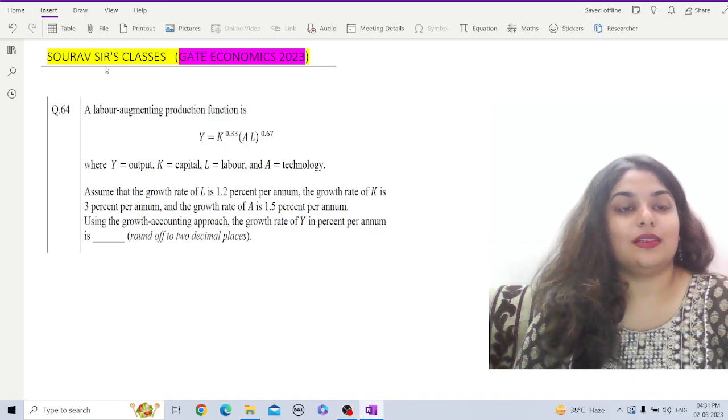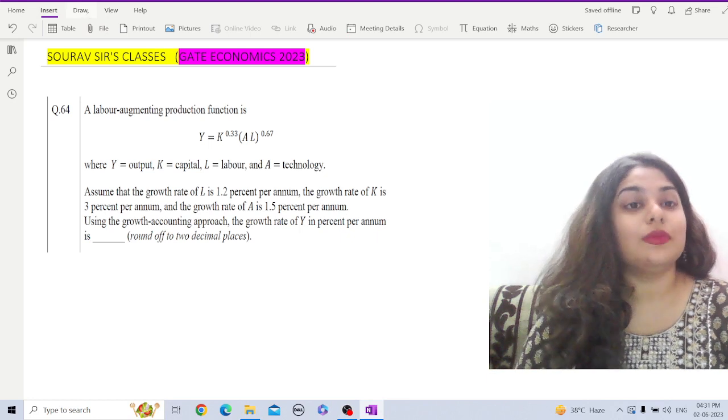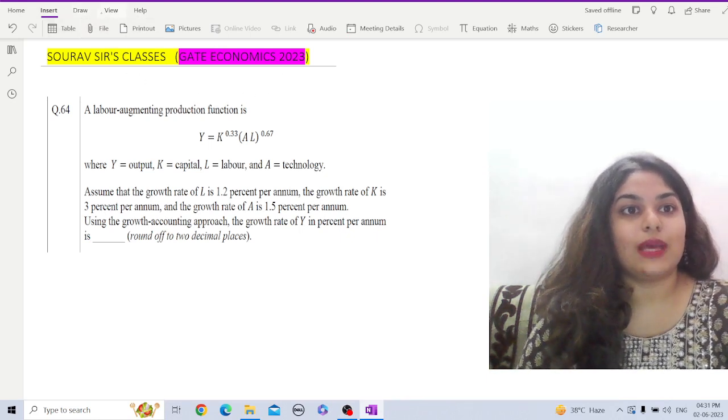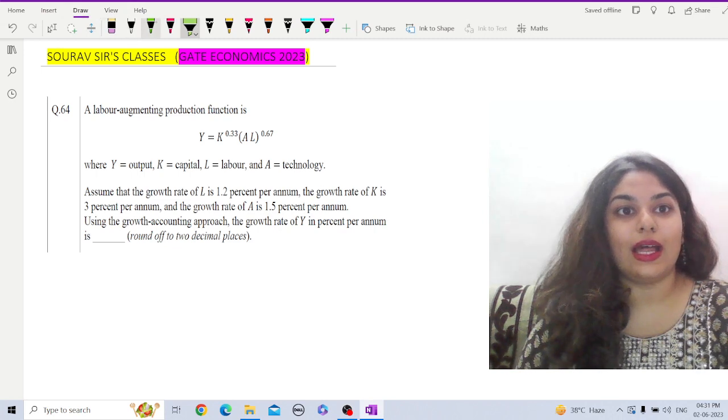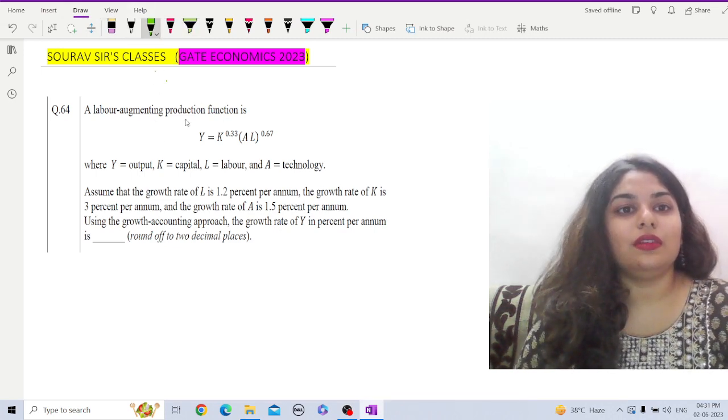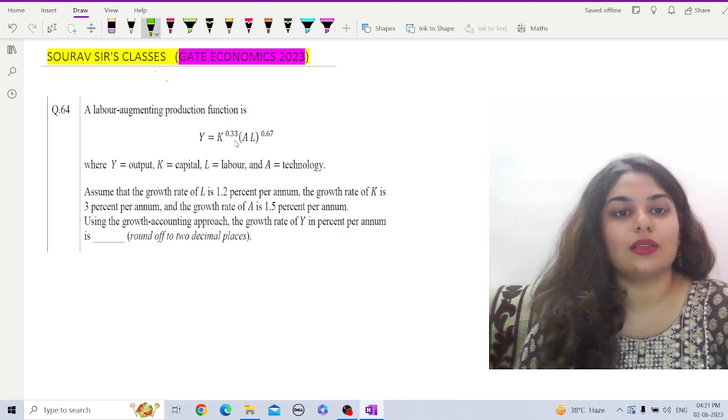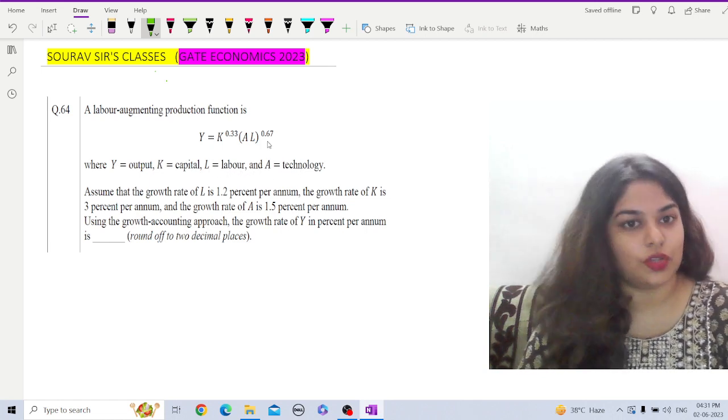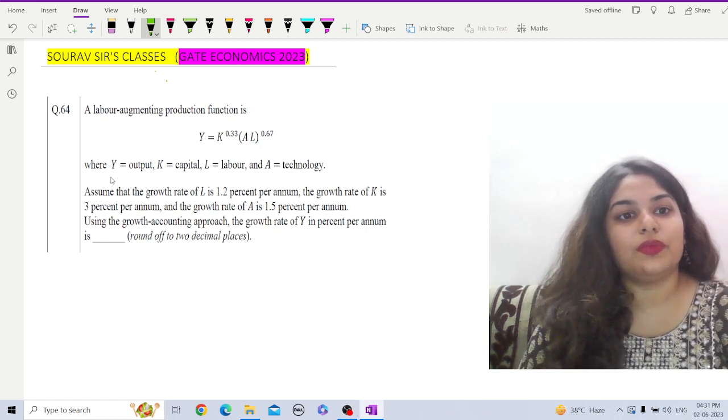Let us discuss the next question from GATE Economics 2023. This question is on mathematical economics again, specifically from the Solow growth model. Here we are given the labor augmenting production function Y = K^0.33 * (AL)^0.67, where Y is output, K is capital, L is labor, and A is technology.